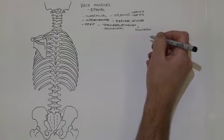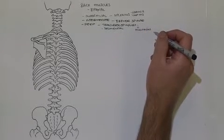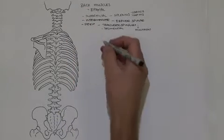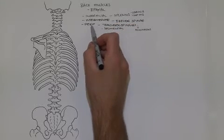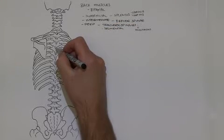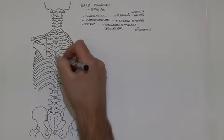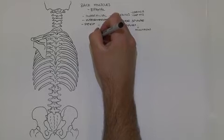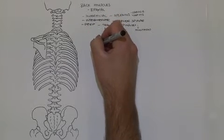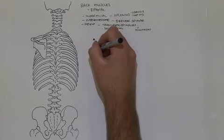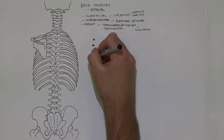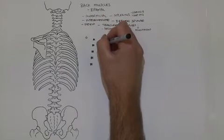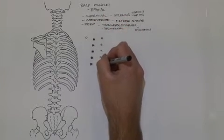Before we draw the muscles onto our back model — which you've been given the template for in your practical workbook — let's do a basic drawing to understand the direction these muscles travel. Here we have the spinous processes along the midline, and lateral to that we have the transverse processes. We'll use squares to represent the spinous processes along the midline, and circles to represent the transverse processes existing laterally.